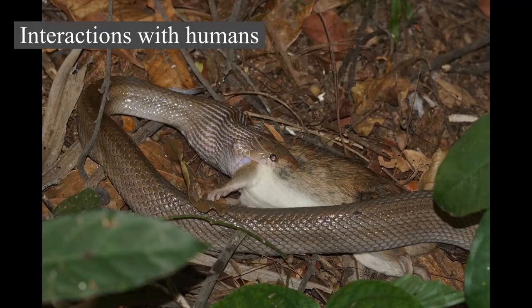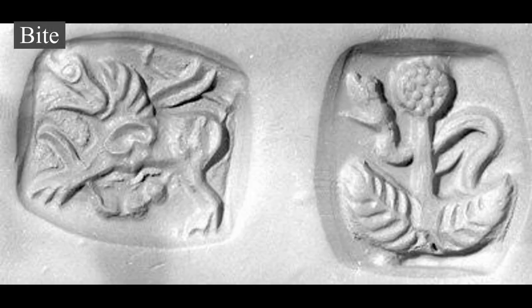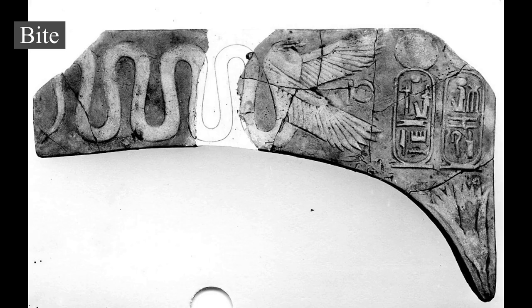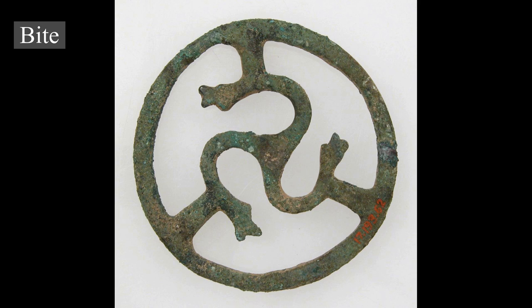Interactions with humans — Bites. Snakes do not ordinarily prey on humans. Unless startled or injured, most snakes prefer to avoid contact and will not attack humans. With the exception of large constrictors, non-venomous snakes are not a threat to humans. The bite of a non-venomous snake is usually harmless — their teeth are adapted for grabbing and holding rather than tearing or inflicting a deep puncture wound. Venomous snakes present far greater hazard to humans. Documented deaths resulting from snake bites are uncommon.